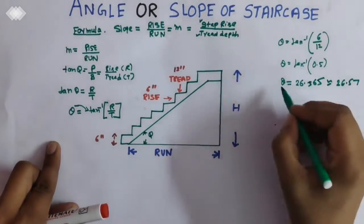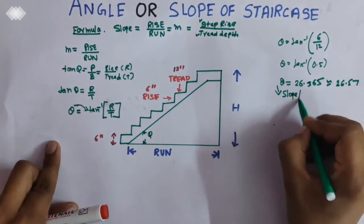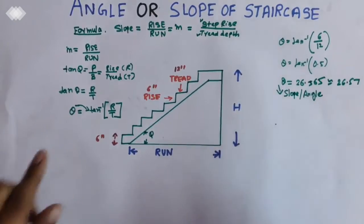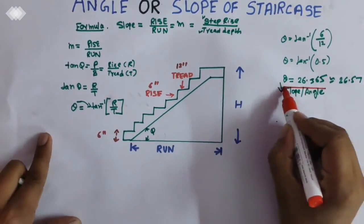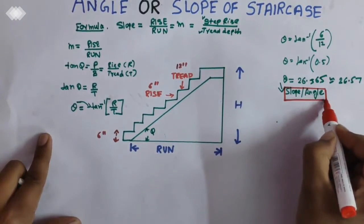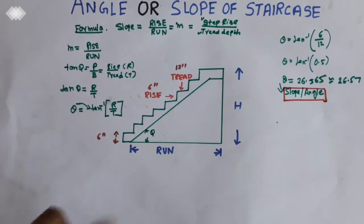So this is the slope or angle of staircase. This comes out to be the angle or slope of staircase.